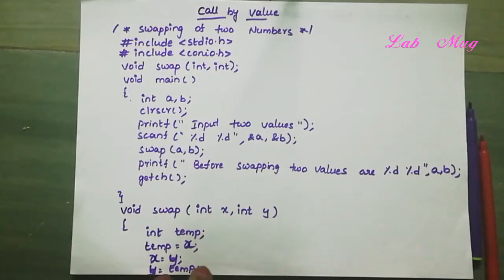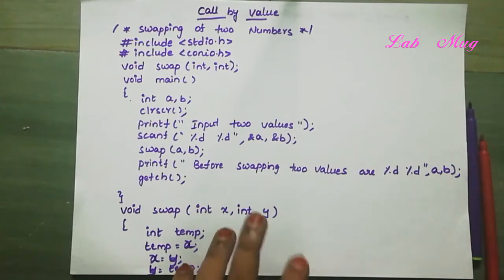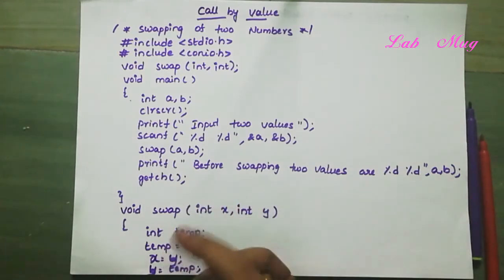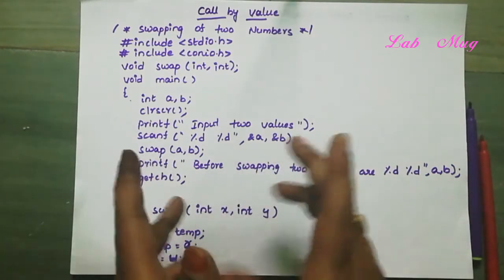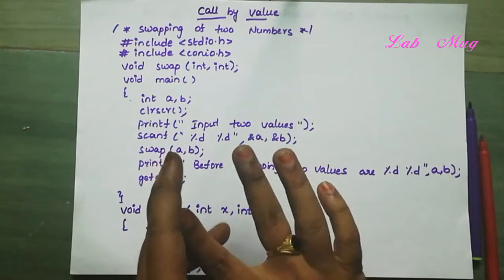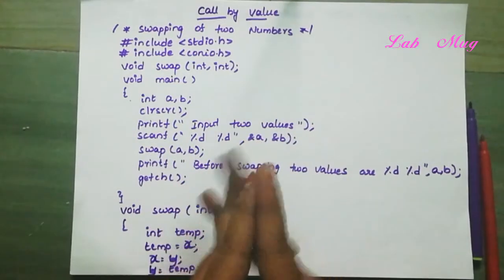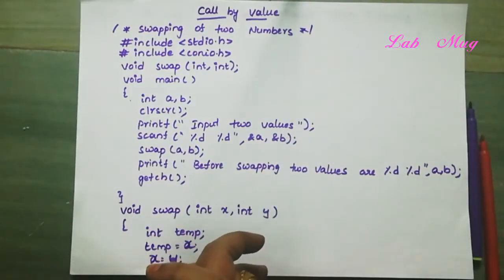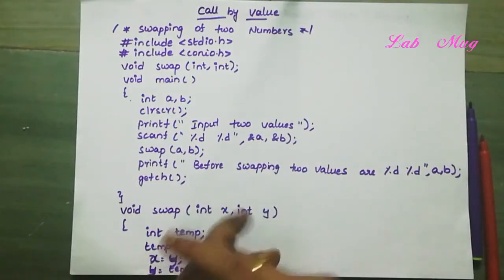Hi students. Last class we discussed calling statements of a function. There are two types of calling statements: call by value and call by reference. Now we will look at a call by value example program.